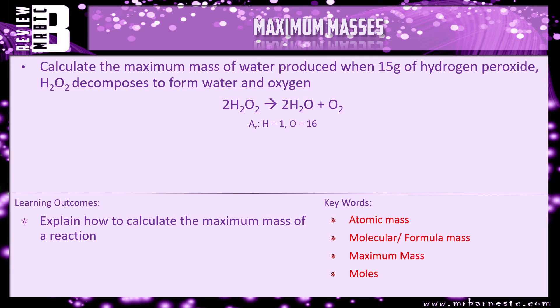And that really is all there is to it. So I have got a review question for you, which says, Calculate the maximum mass of water, H2O, produced when 15 grams of hydrogen peroxide, H2O2, decomposes to form water and oxygen. So you've got the balanced equation, you've got the atomic masses. Have a go at it. And that brings this video to an end.